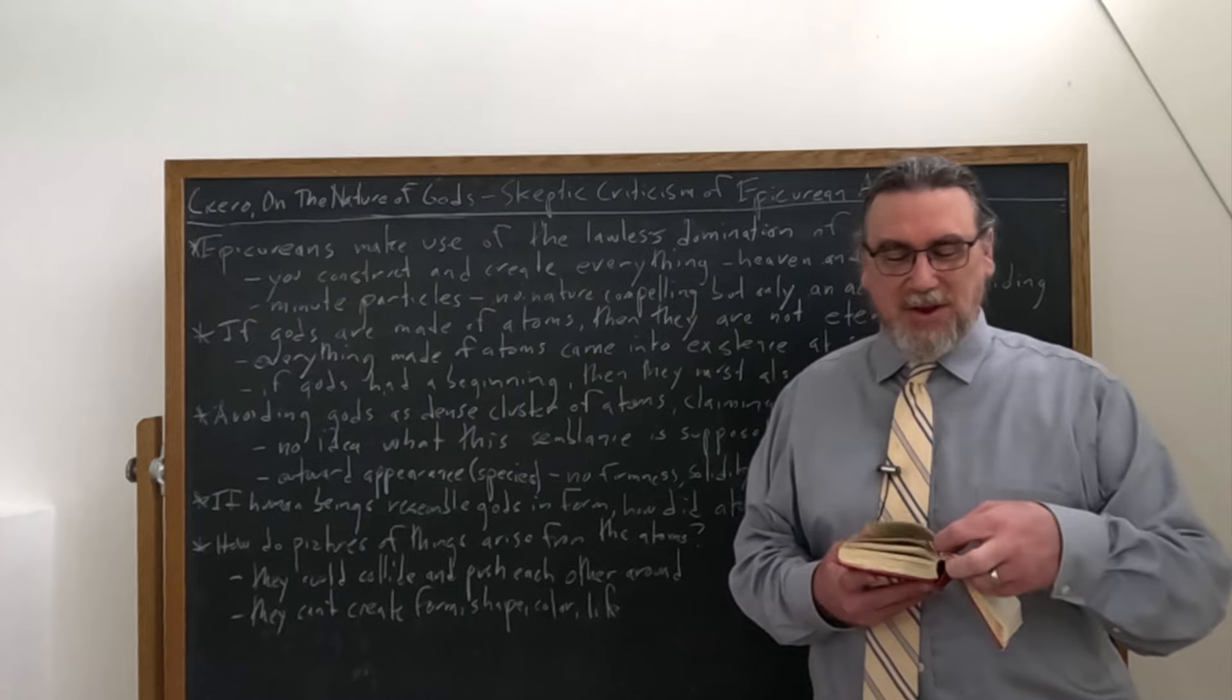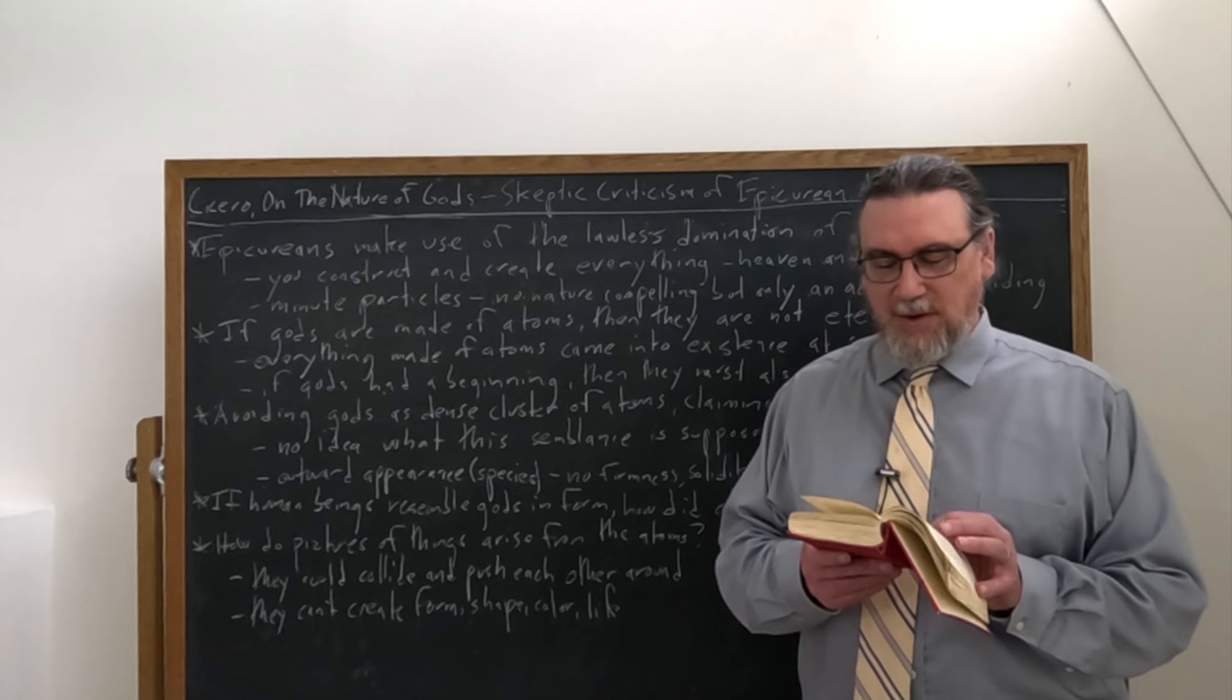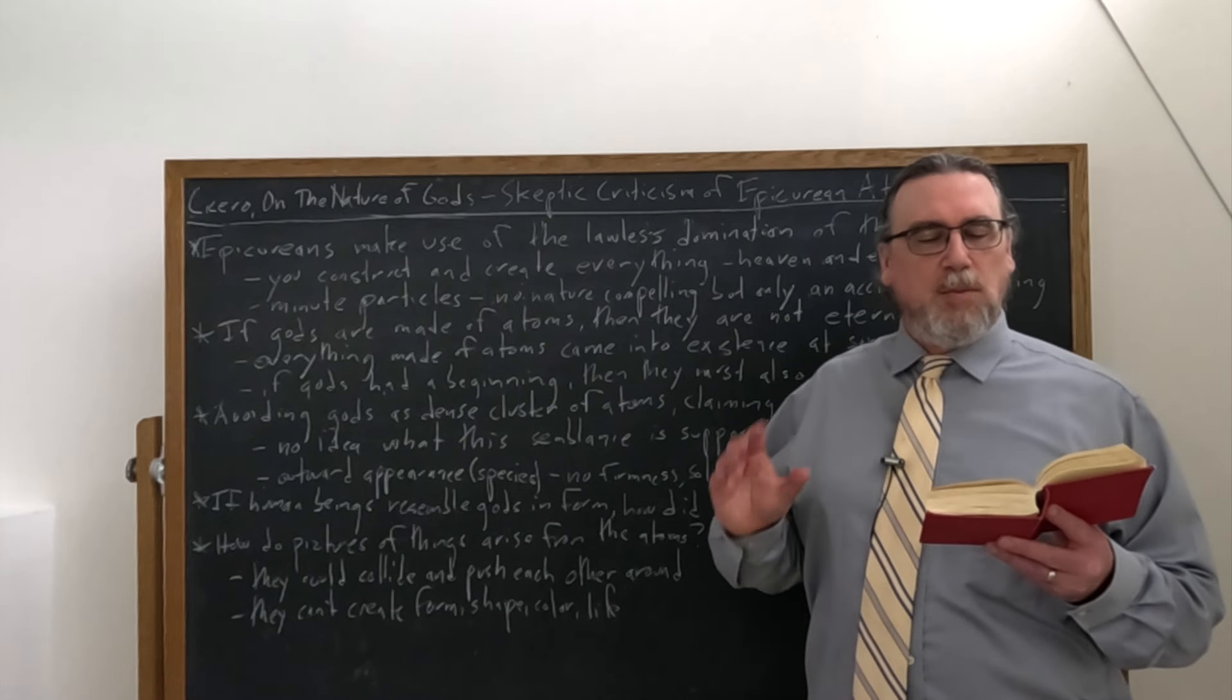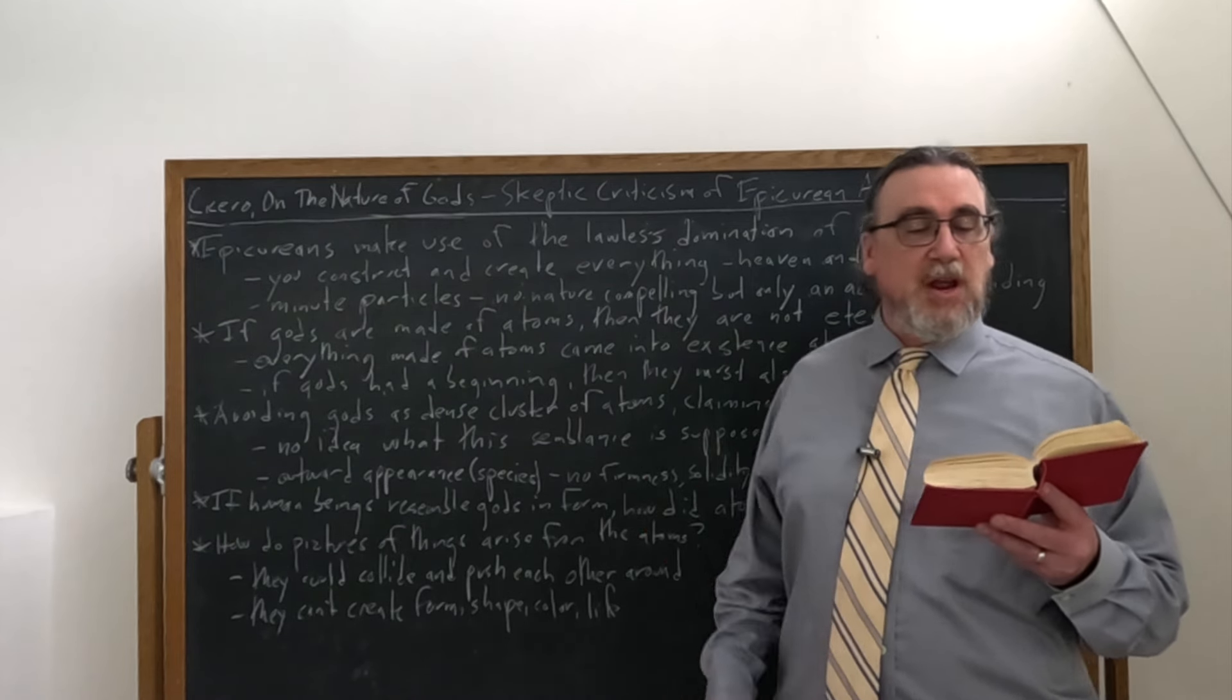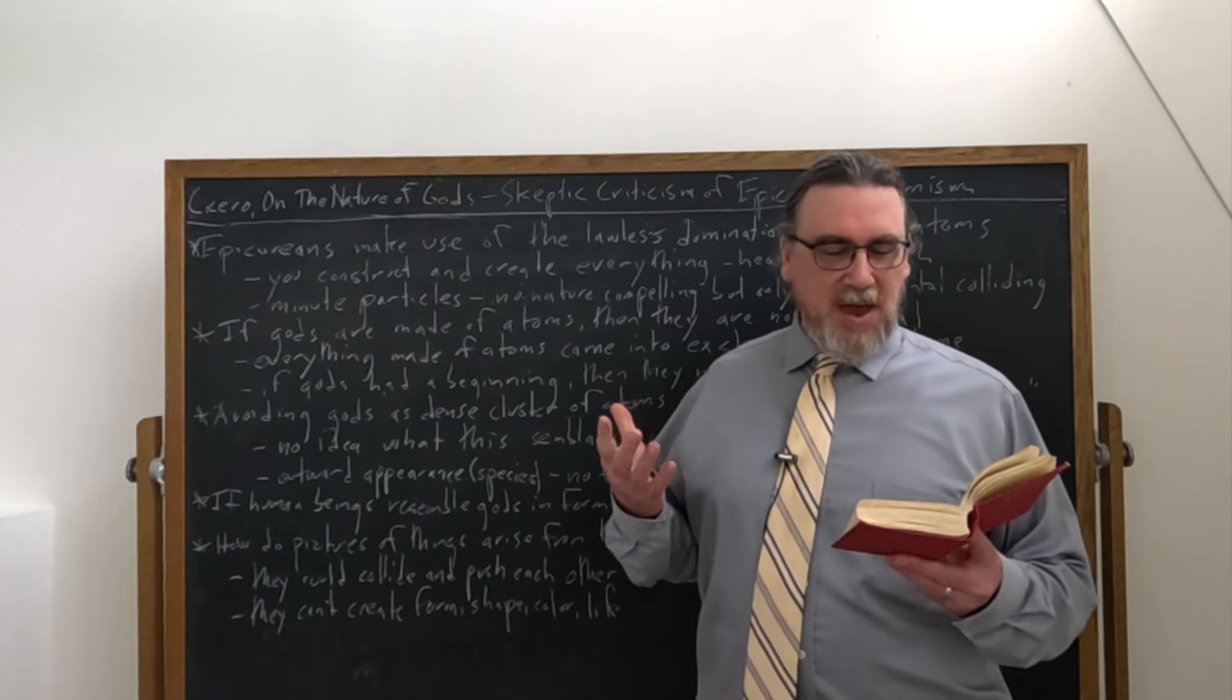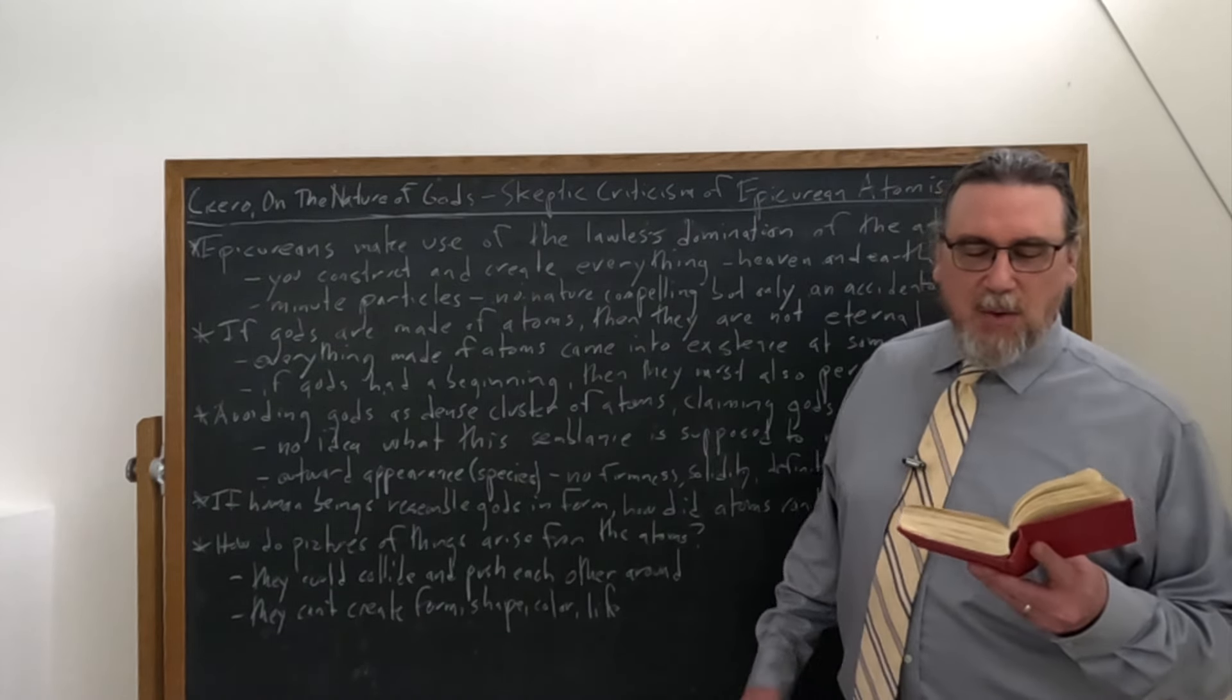And then he's going to return to this question of images a little bit later on. And he says, I don't actually understand this doctrine that you have here that says there's a constant passage or stream of visual presentations which produce a visual impression. I don't understand this. I don't think that you do. How can you prove that the stream of images is continuous or how are the images eternal? You say there's an innumerable supply of atoms. Great. Maybe there are. But that doesn't actually get you a consistent presentation that remains the same all of the time. How do you come up with that? He says, how do your pictures of objects arise out of the atoms?